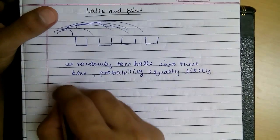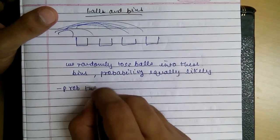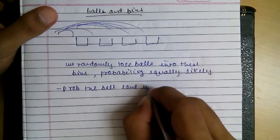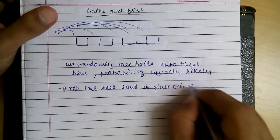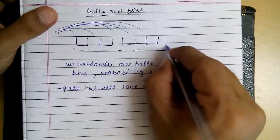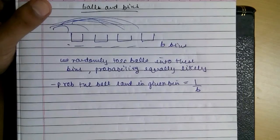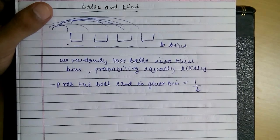Let's start. Probability that the ball land in any given bin will be 1 by B as there are B bins.